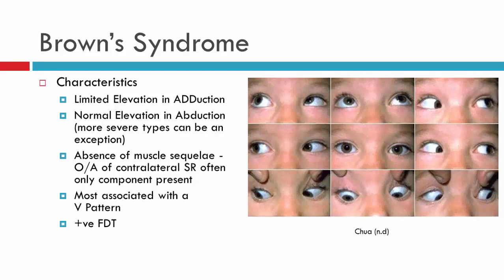We'll also see an absence of muscle sequelae. Because Brown syndrome is mechanical in nature, it generally does not have associated muscle sequelae. However, you may see an overaction of the superior rectus, which is the yoke muscle or contralateral synergist. This is probably the most common associated sign, but generally down gaze will be fine and you won't see the ipsilateral antagonist overacting.